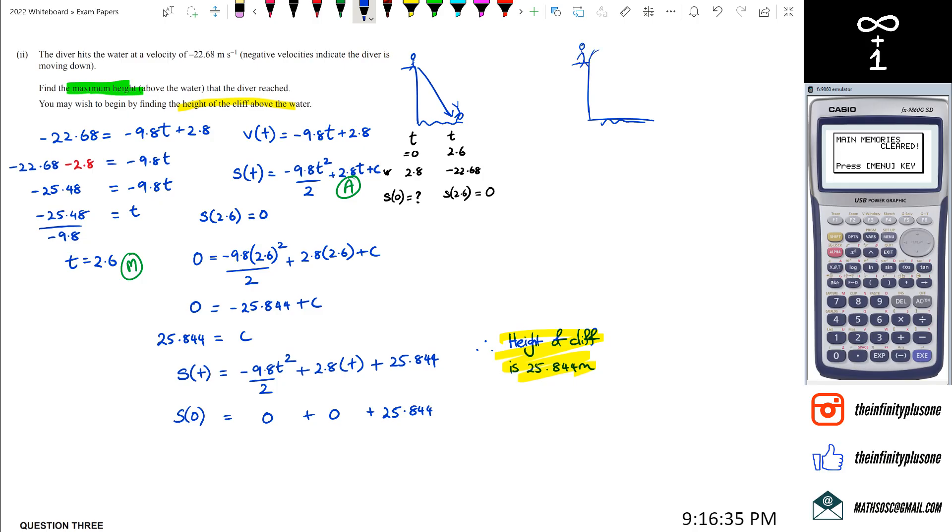At some point, he's going to reach a velocity of zero. Because along here he's got a positive velocity, and along here he's got a negative velocity. So we've got to find out when his velocity is actually equal to zero. By doing this, we're going to put 0 = -9.8t + 2.8.